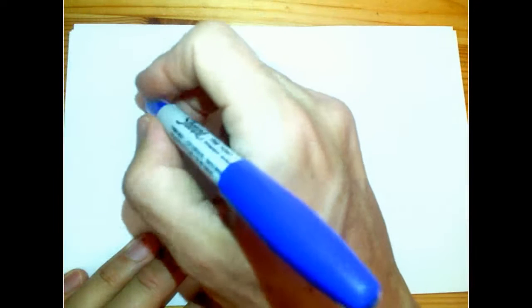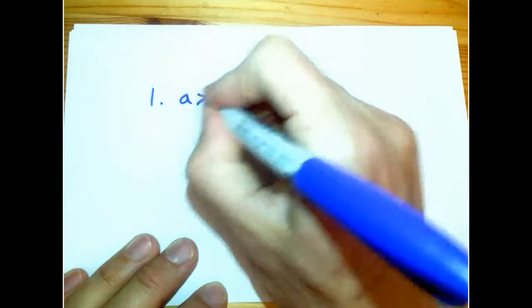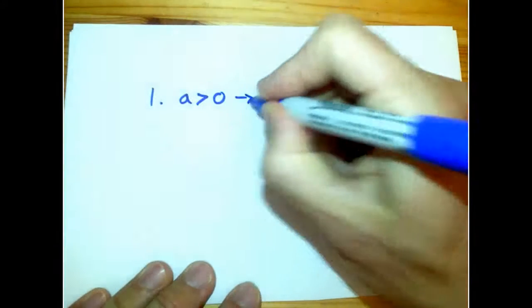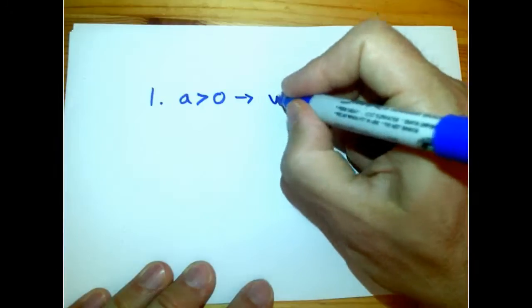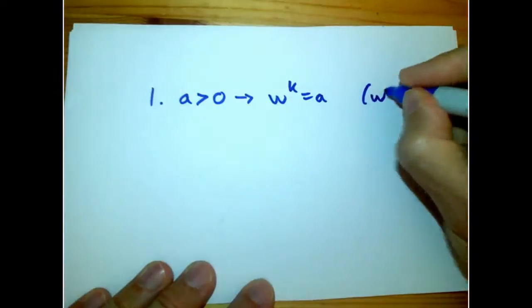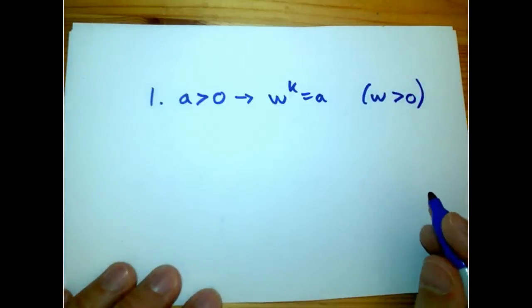So the first one is simply a real number. Suppose that case one, a is greater than zero. So that just means it's a real number and greater than zero. Then there is a solution to w^k equals a, and of course w can be chosen to be greater than zero.